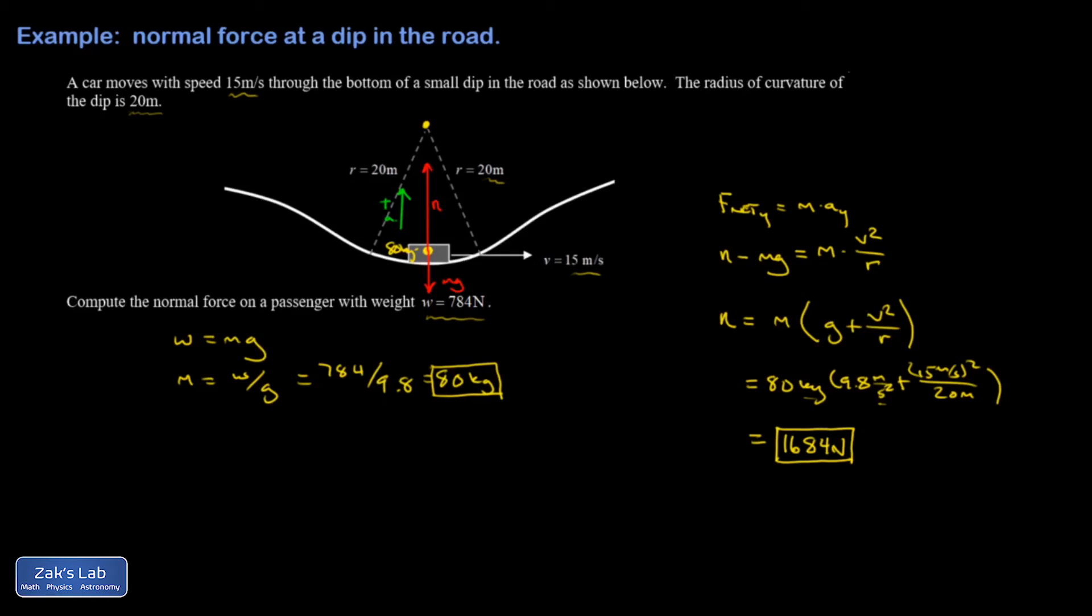The usefulness of expressing this person's weight as 784 is this gives me a sense for how much the person ordinarily feels the normal force pushing up on their feet, or if they're sitting down, the chair pushing up on their butt—784 newtons of force. Right now they're feeling more than double that much. So this is a really intense turn.